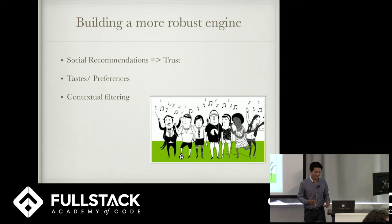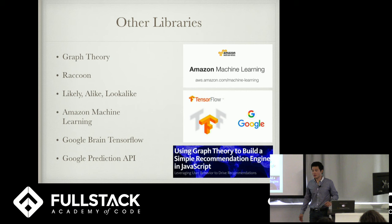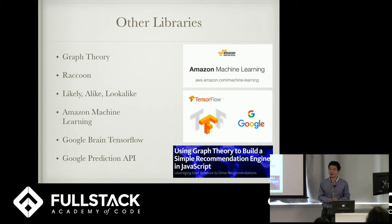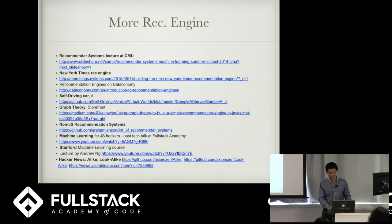Some libraries you could use include the graph theory library that Facebook uses. Storefront has a really cool article on this topic I highly recommend. Raccoon library is a cool one. Likely and I-Like libraries were featured on Hacker News and Y Combinator homepage. Amazon Machine Learning is a really cool one as well. Google Brain's TensorFlow and Google Prediction API are awesome. Google has declared themselves a machine learning company and has some really cool libraries I highly recommend you check out. I'm probably going to work on this topic for my stackathon as well.